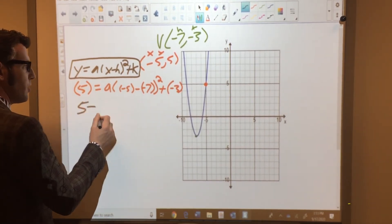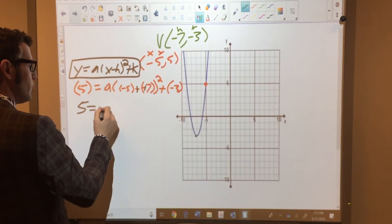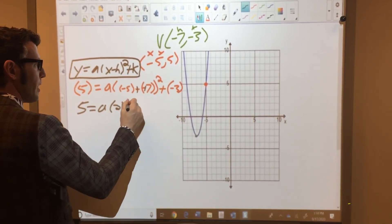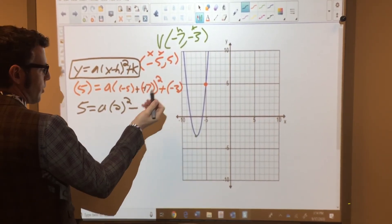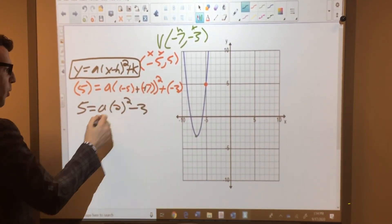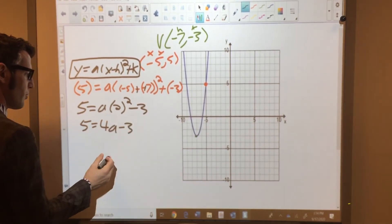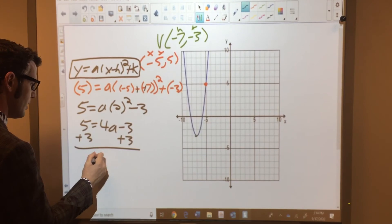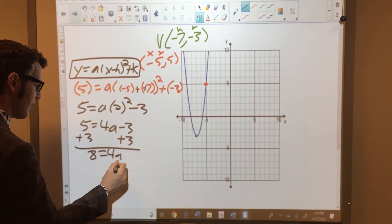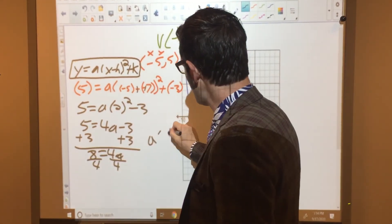So 5 equals, this is negative 5 minus negative 7. So that's plus, that's 2. So that's a times 2 squared plus or minus 3. We can say the same plus negative 3. So this is 4. So this is 5 equals 4a minus 3. If I add 3 to both sides, that's 8 equals 4a. I divide by 4, and that tells me that a equals 2.